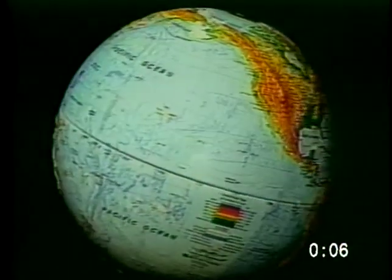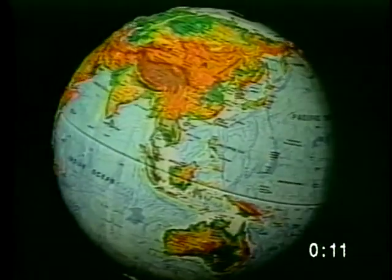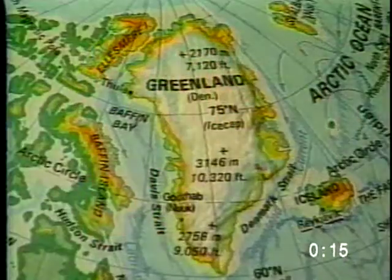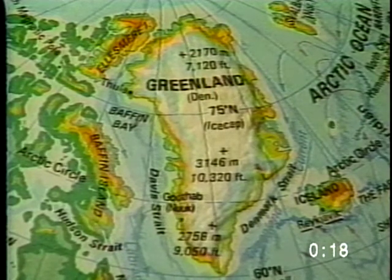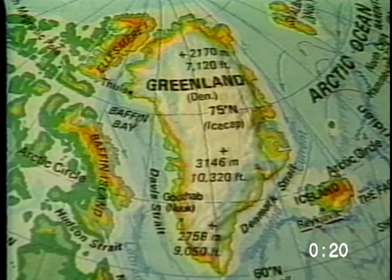A globe is a scale model of the Earth. Because a globe is a sphere, like the Earth, it is the best representation of things that appear on the Earth's surface. A globe shows accurate shapes, sizes, distances, and directions, all at the same time.